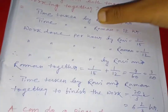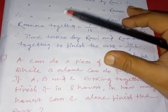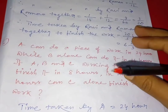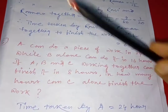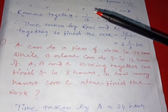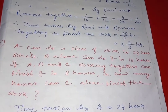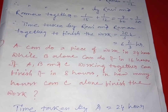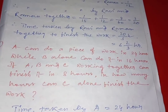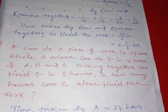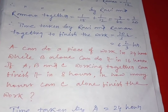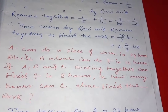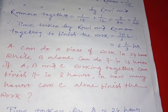This is the way to do this kind of problem. This is a very easy and scoreable chapter. Now the second question — question number six — says: A can do a piece of work in 24 hours while B alone can do it in 16 hours. If A, B, and C working together can finish it in 8 hours, then in how many hours can C alone finish the work?